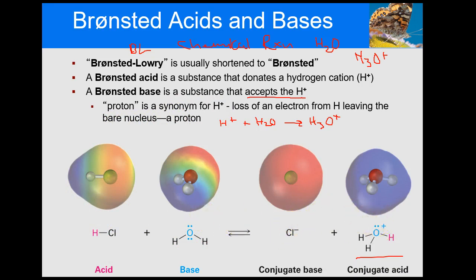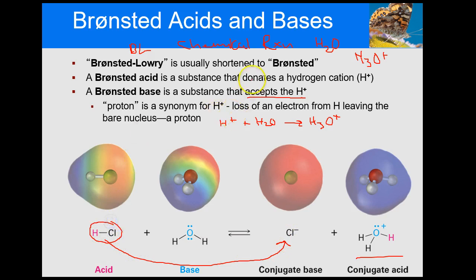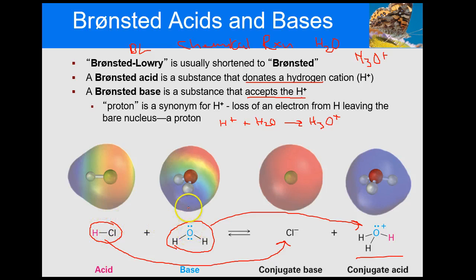To determine acid or base, you look at the products. Comparing HCl to what happened: chlorine donated the proton, so HCl is acting as an acid. Water started as H2O and became H3O-plus — it accepted the hydrogen — so water is acting as a proton acceptor, a base. In Bronsted acid-base reactions, you always have both an acid and a base in the reaction.